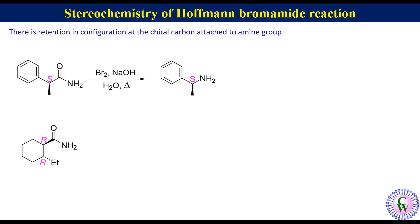In another example, there are two chiral centers both with R configuration. There won't be any change in configuration at either chiral center, and the product will also have R configuration on both chiral centers.